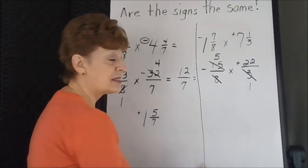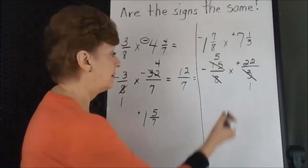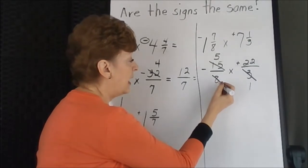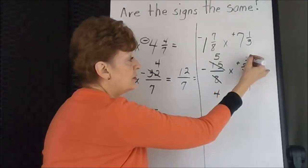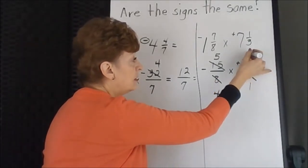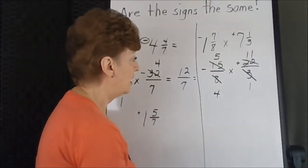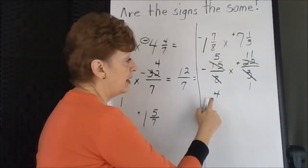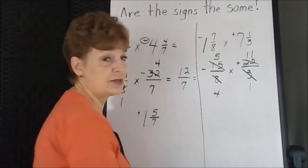So if that's the first one that pops into your head, so be it. 2 goes into 8 four times. 2 divides into 22 11 times. And that was the greatest common factor because these two are not reducible any farther.